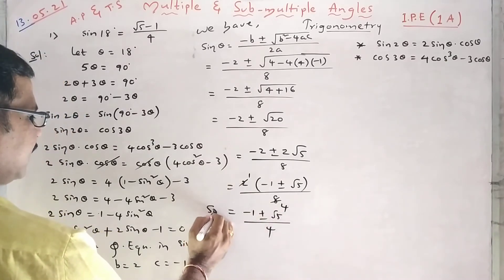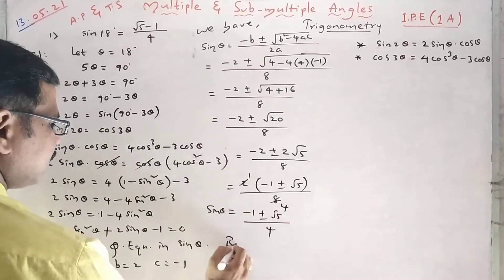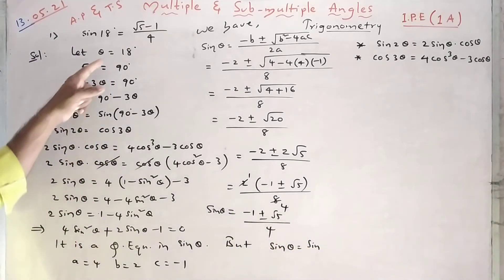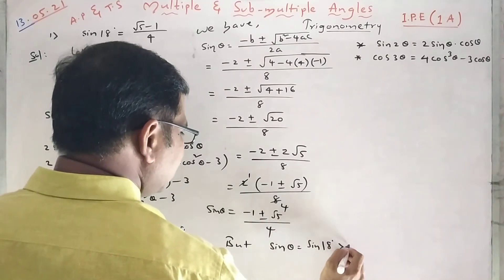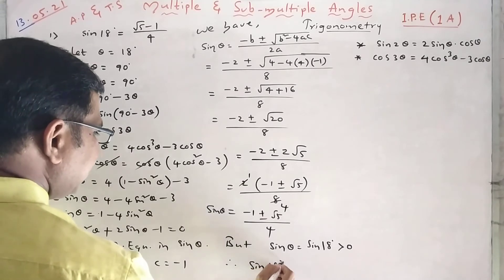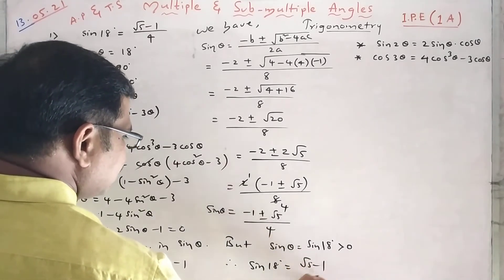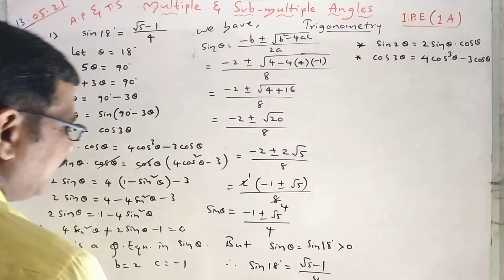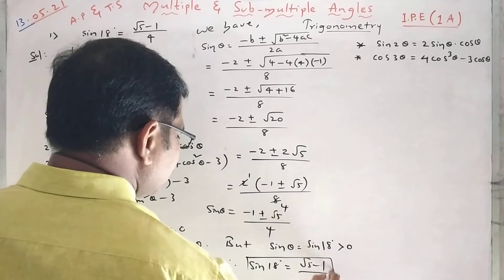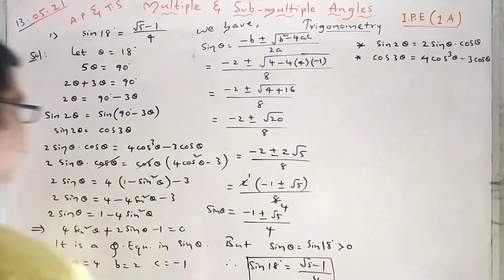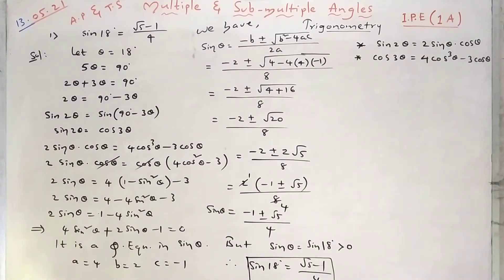So sin theta equals (−1 ± √5) / 4. Since theta is 18 degrees, sin 18 is a positive value. So we take the positive root. Therefore, sin 18 degrees equals (√5 − 1) / 4. We don't want the negative value because sin 18 is positive. This completes the proof for sin 18 degrees.